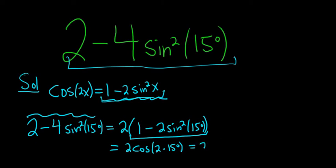This is the same thing as 2 times cosine of 30 degrees. And the cosine of 30 is equal to the square root of 3 over 2. So this is 2 times the square root of 3 over 2. The 2's cancel, and so we end up with the square root of 3. And that's the final answer.